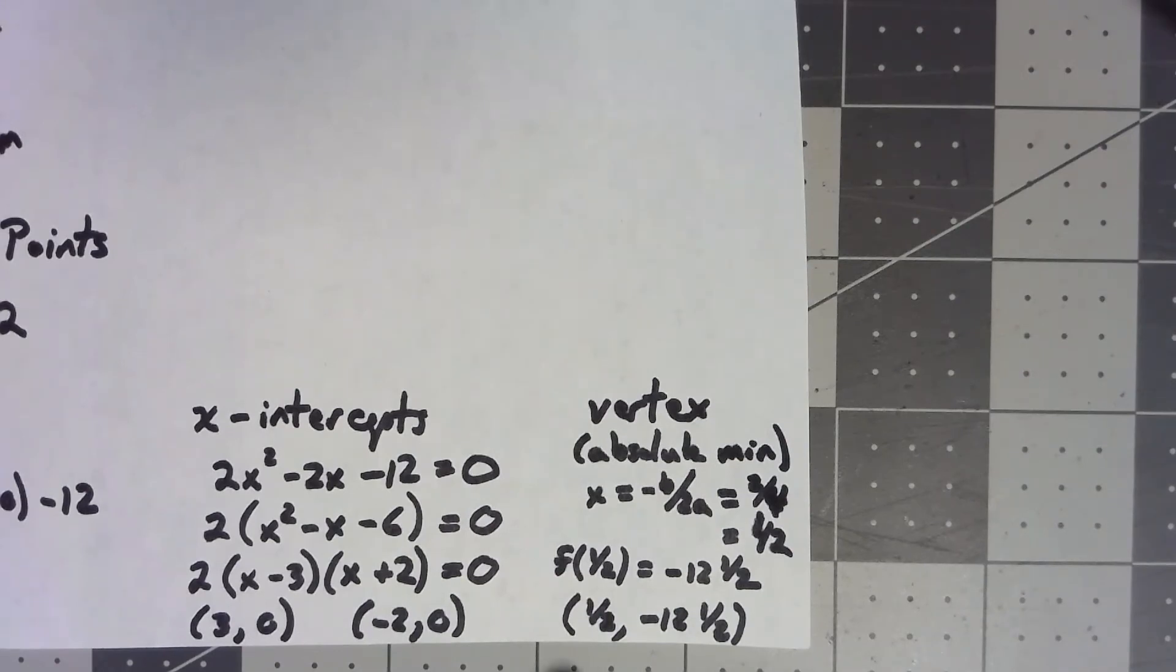And so, the vertex, that absolute min, is one half, negative twelve and a half. So, at least in this case, at least for a quadratic, we can find all these points.